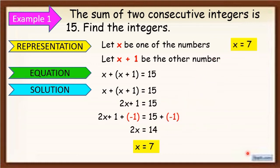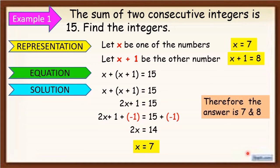To get the other number, x plus 1 — so 7 plus 1 is equal to 8. Therefore, the two consecutive integers are 7 and 8. To check if this is correct, just add 7 and 8 — the answer is 15. And as you can see, 7 and 8 are consecutive integers.